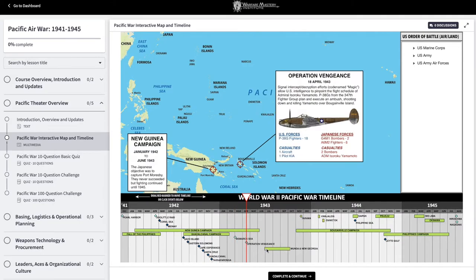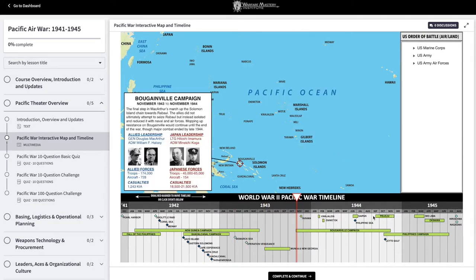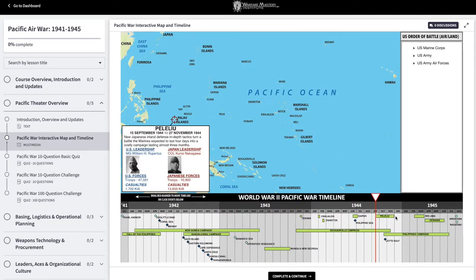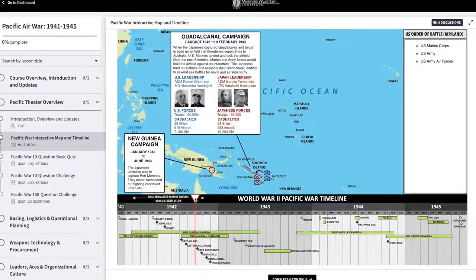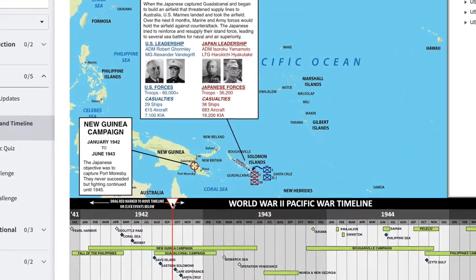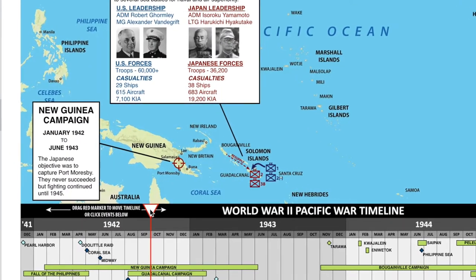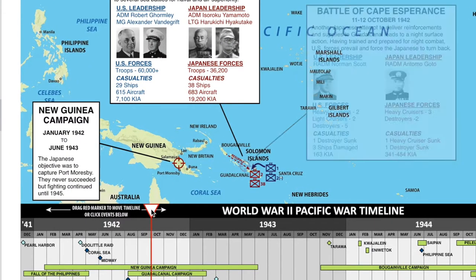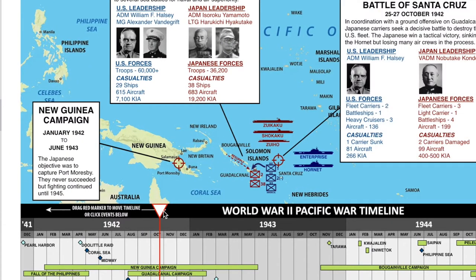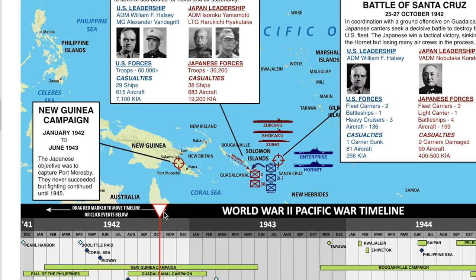An interactive digital map like this also allows us to present information in new ways. For example, in the Guadalcanal Campaign in October of 1942, Admiral William F. Halsey replaced Admiral Robert Gormley. And if we drag the timeline along the Guadalcanal Campaign, we can see that the leadership changes from Gormley to Halsey in October.